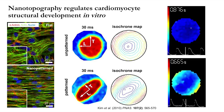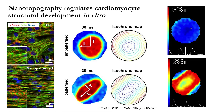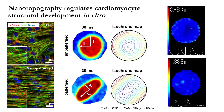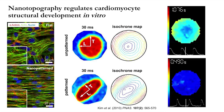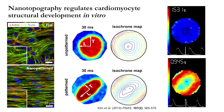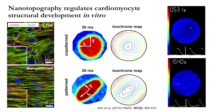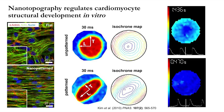These improvements in structural development in cardiomyocytes translate into subsequent improvements in functional performance. We see here optical mapping data showing the propagation pattern on flat and nanopattern surfaces. While flat surfaces promote a radial propagation pattern from the point of activation, we see more anisotropic conduction patterns in nanopattern cardiomyocytes, creating a system more representative of action potential propagation within myocardial tissue.